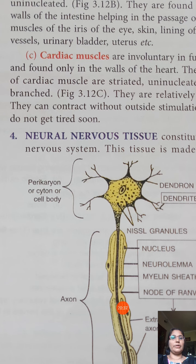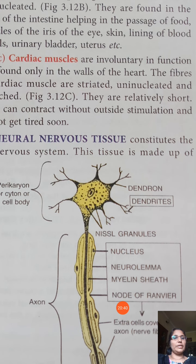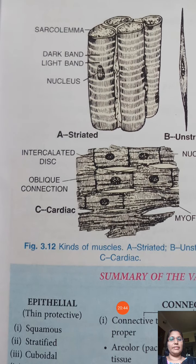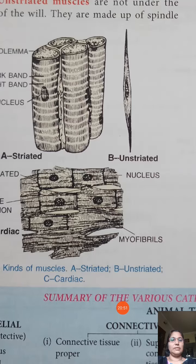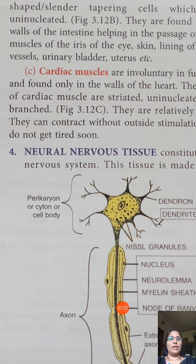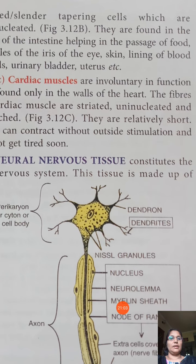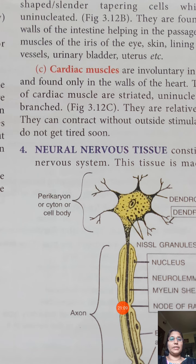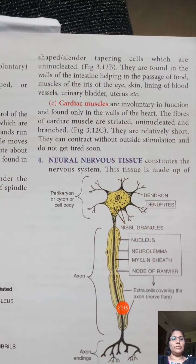Cardiac muscles are found in the heart and are also involuntary. They have a special branched structure and are striated, uninucleated, and branched. We cannot control cardiac muscles according to our will.